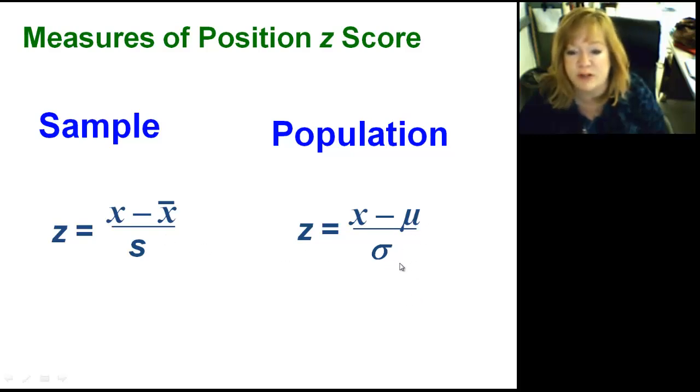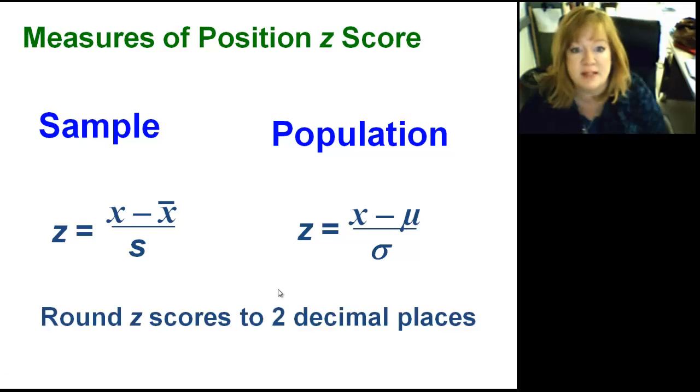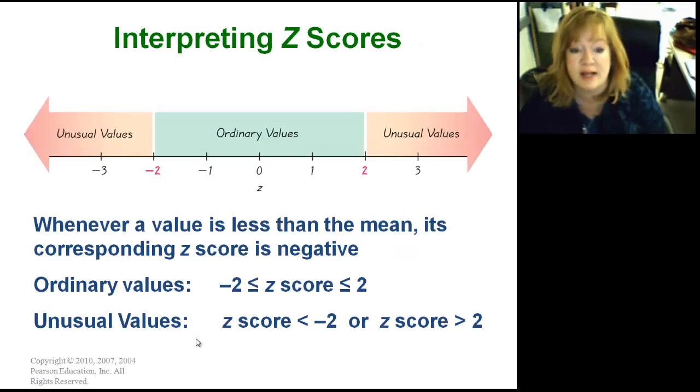They mean the same thing, just different variables to represent the mean and the standard deviation. You round z-scores to two decimal places. And z-scores can be negative. So here's what you'll get when you calculate your z-scores in order to interpret them. Ordinary values in your data set should fall within two standard deviations of your mean. And the z-score of your mean is always going to be zero.